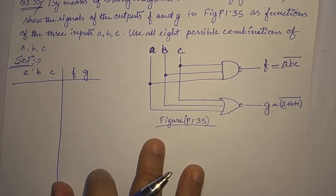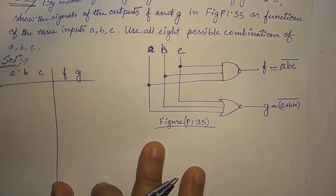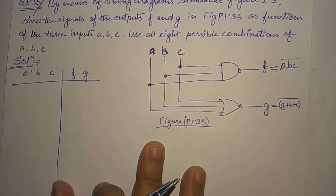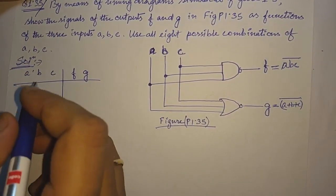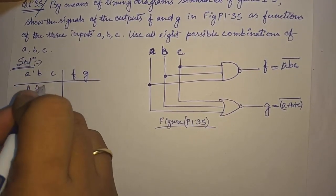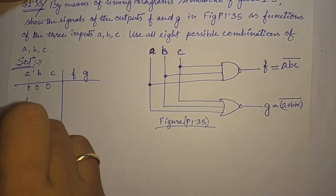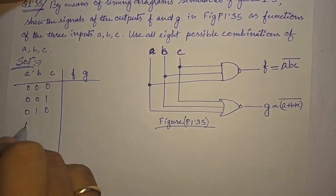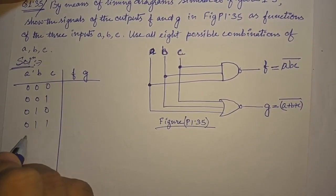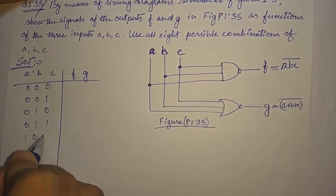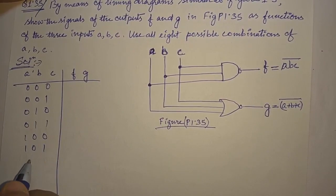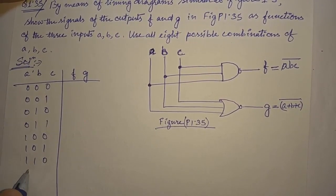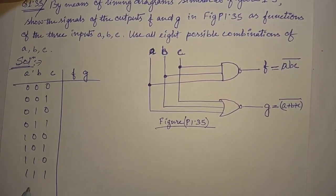We have to consider all eight combinations. The combinations are: 0 0 0, 0 0 1, 0 1 0, 0 1 1, 1 0 0, 1 0 1, 1 1 0, and 1 1 1. Now let us find out the f and g values.